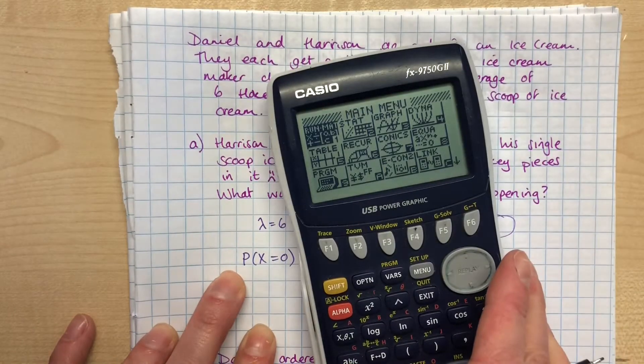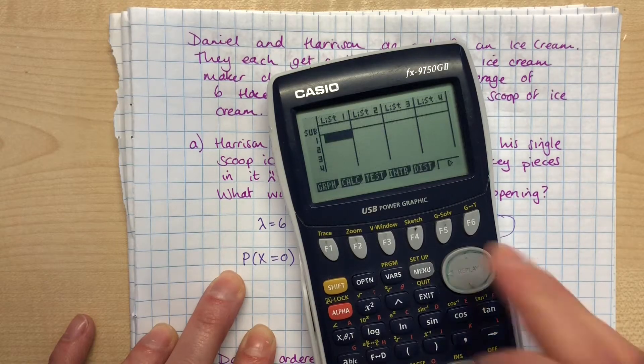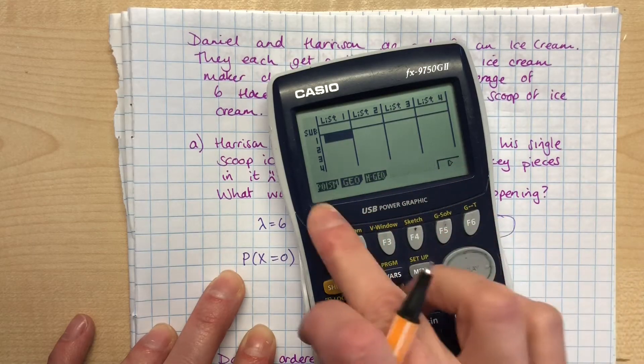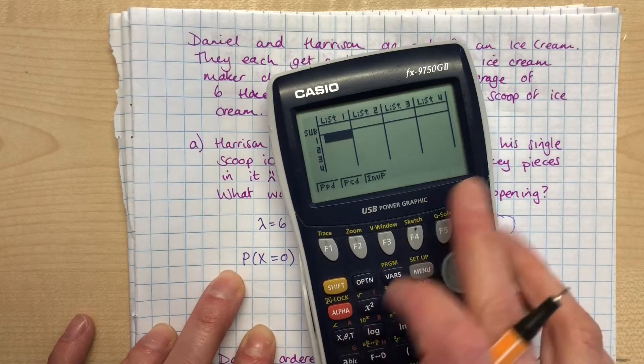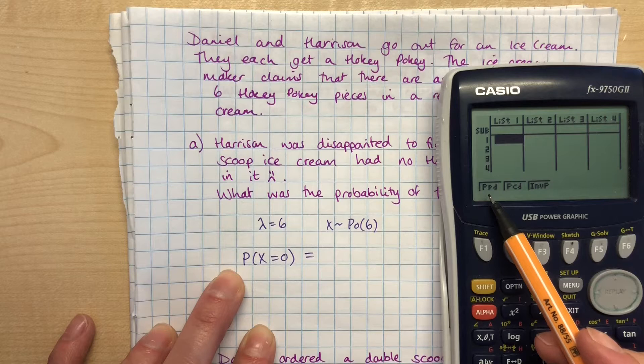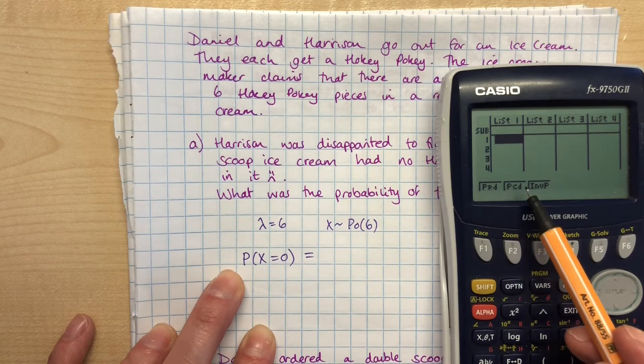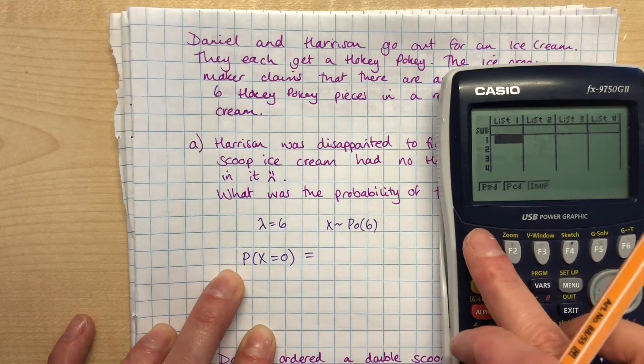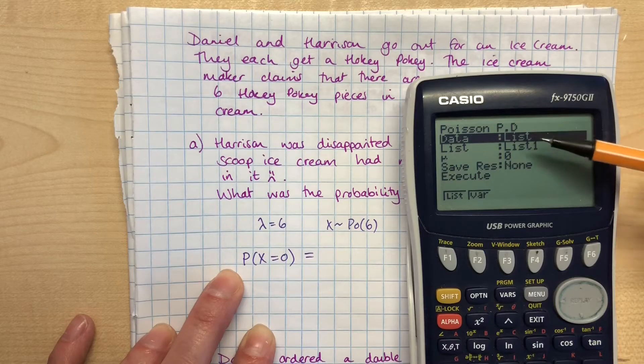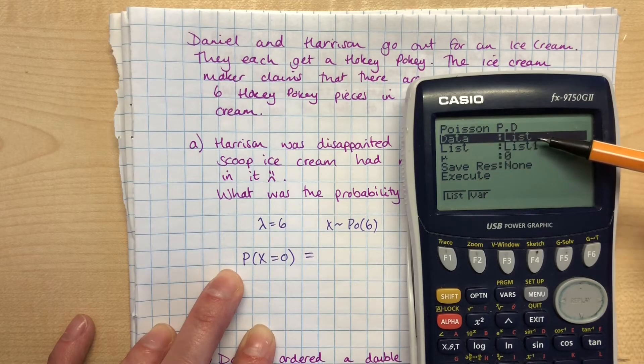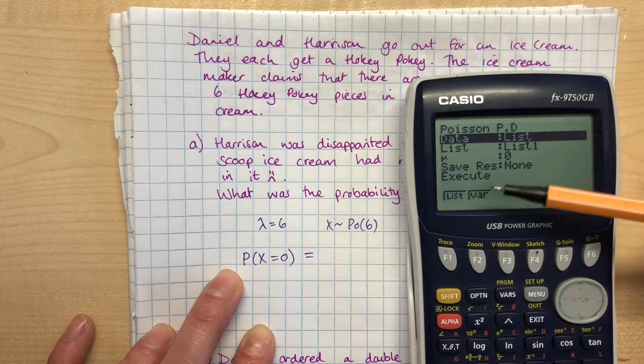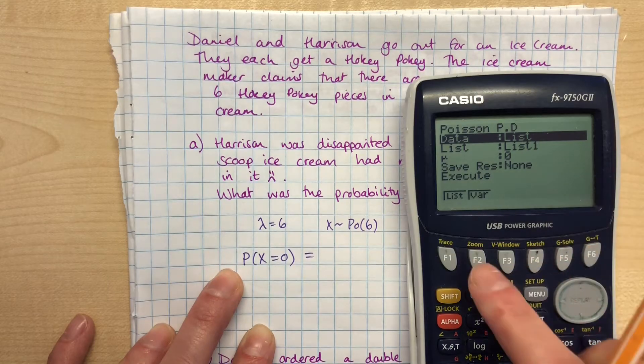We go over to our graphics calculator. We want to be in the stats menu, we'll go along to distributions, and we're looking for Poisson. It's not there, so we need to arrow to move along and find Poisson just here, so press F1. Now we are finding the answer at one particular point, so we need to go for PPD. PCD is when you're doing cumulative up to and including a point. We want PPD. Now I've reset the calculator so you can see what this will probably look like when you open it up.